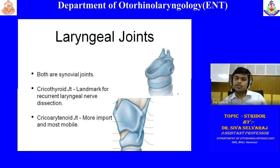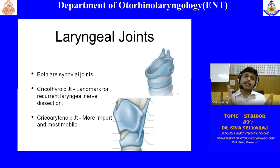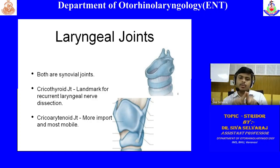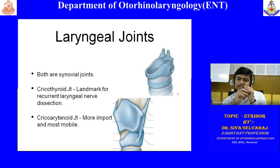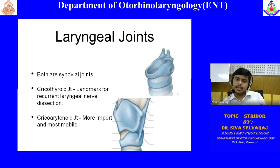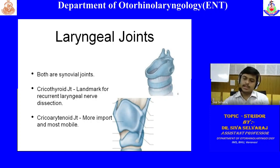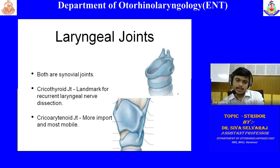The cricoarytenoid joint is the most important and more mobile laryngeal joint. It moves every single time you are trying to speak or breathe — for inspiration the vocal cord abducts, and for speaking the vocal cord adducts. So for every single movement of respiration, the cricoarytenoid joint must move.